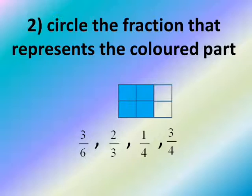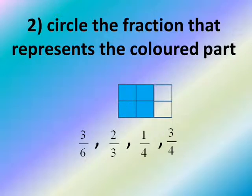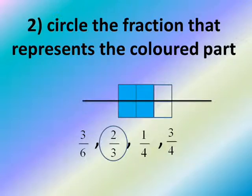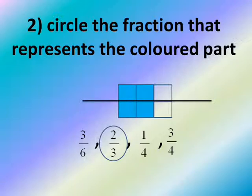Number 2: We have 4 squares colored from 6, so we have 4 over 6. But we don't have 4 over 6 in the multiple choice. We have 3 parts up and 3 parts down. We have 2 colored parts from the 3 parts up, and 2 colored squares down. So the answer is 2 over 3.